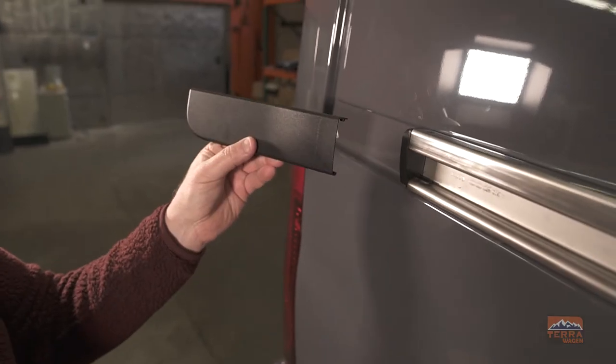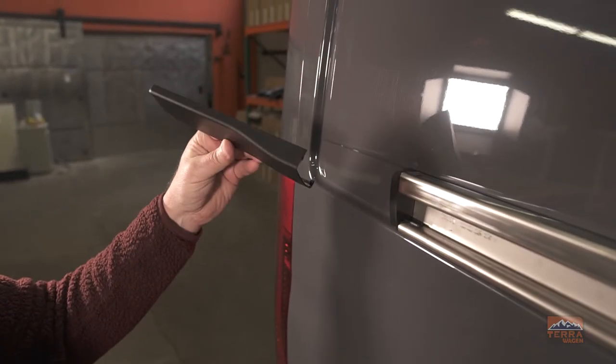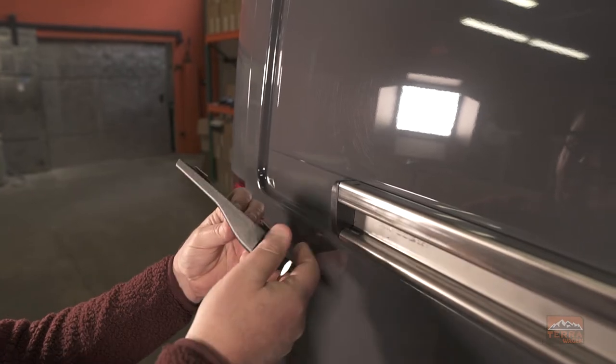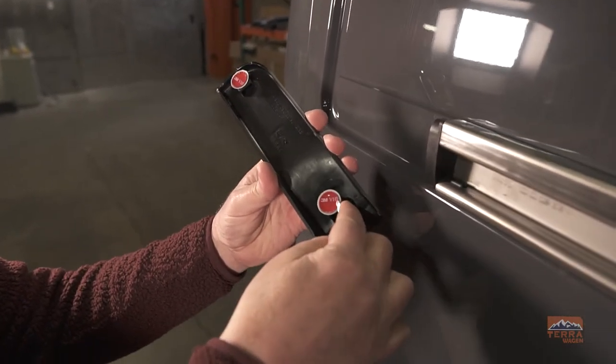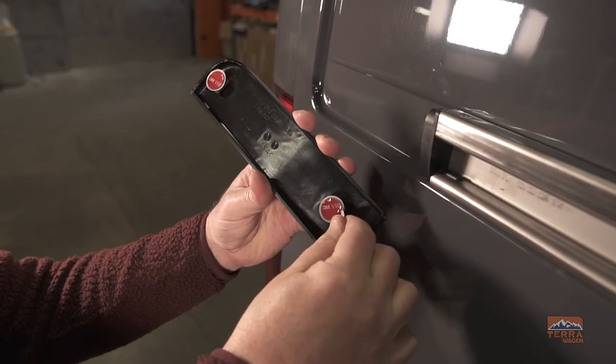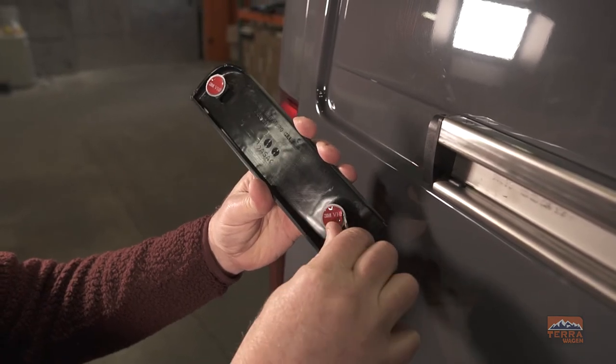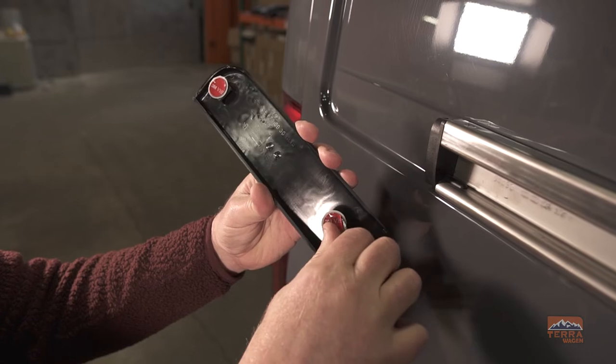And we're going to take our door trim, make sure it's oriented the right way. Remove the adhesive backings. We recommend using an X-Acto knife or something small that can get underneath the protective cover.